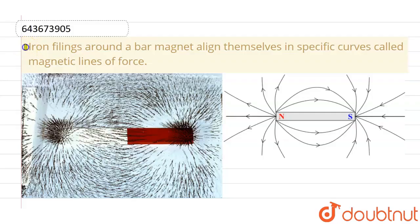This given question is: iron filings around a bar magnet align themselves in specific curves called magnetic lines of force. So we have to tell if this given statement is a true statement or a false statement.